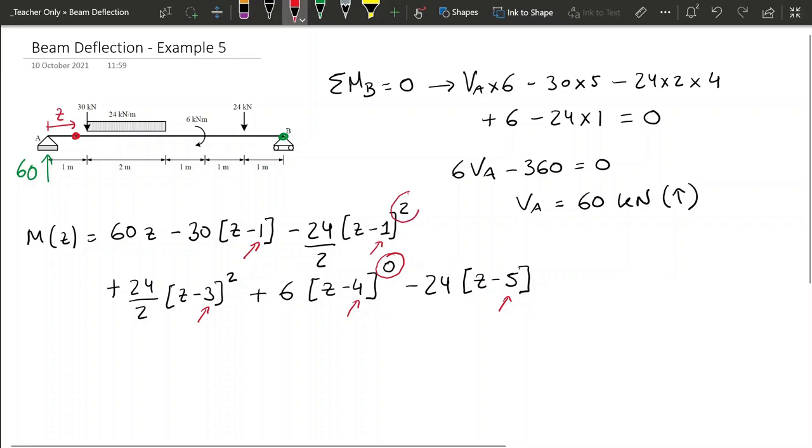If it's a UDL, we put an exponent of 2, and then if it's a concentrated load, we put exponents of 1 that are hidden here. So the idea here is to follow very carefully these steps, and you can always get your moment equation, no matter how complicated the problem might look in the beginning.